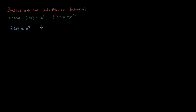we know that f prime at x, from our power rule, is equal to 3x squared. So now if you wanted to go from 3x squared back to x cubed, we would take what's called the integral or the antiderivative, and that'll give us x cubed — and I'll get back to that in just a moment.